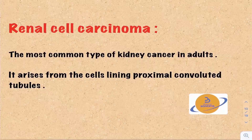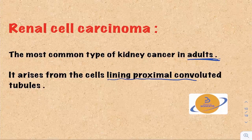Renal cell carcinoma is the most common type of kidney cancer in adults. It arises from the cells lining the proximal convoluted tubule, and that's why I mentioned it here.